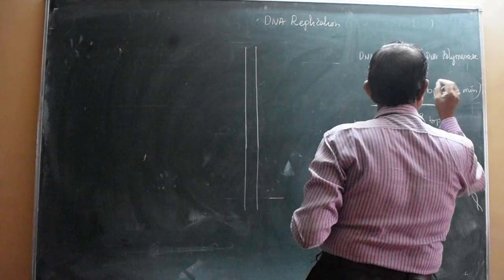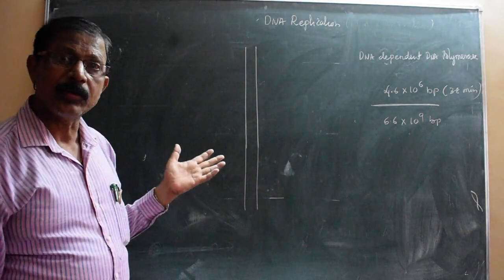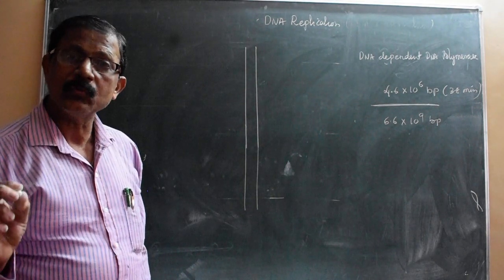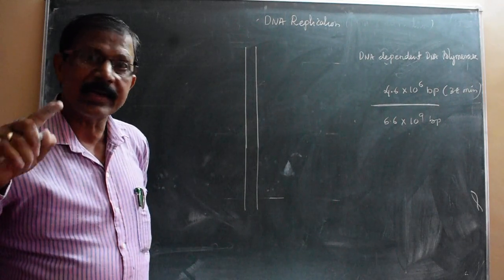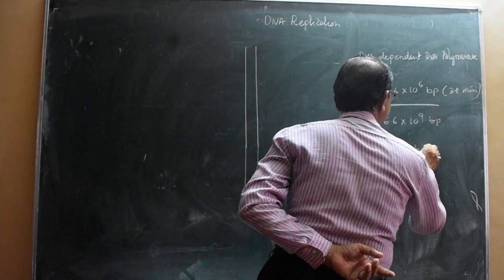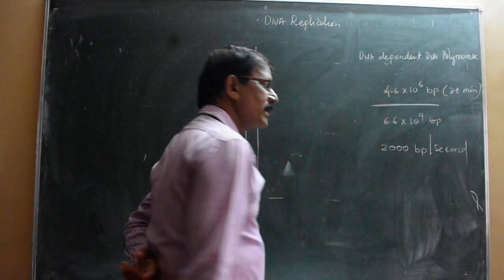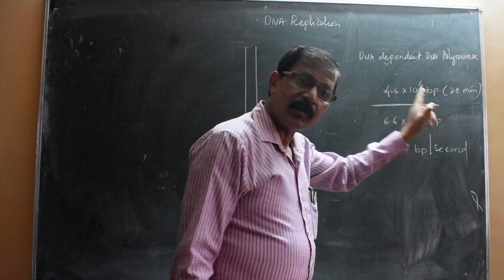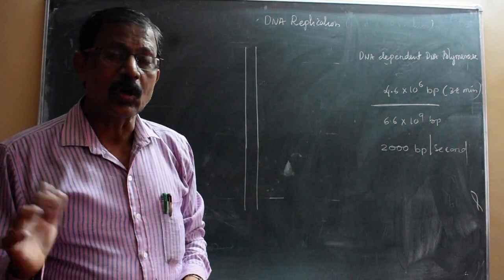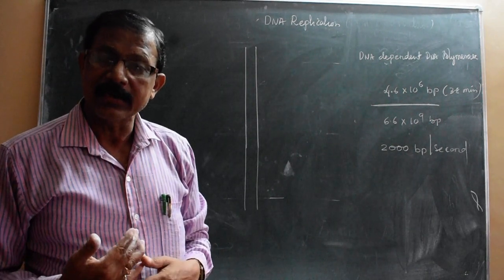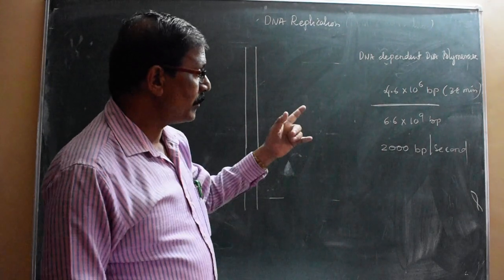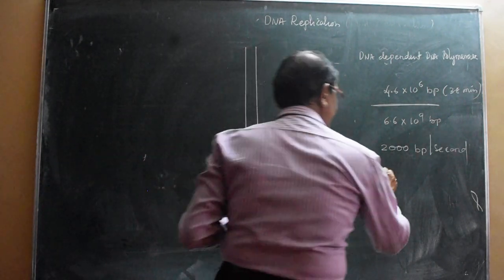Per second in E. coli, 2000 base pairs are polymerized - 2000 BP per second. Just imagine in what way DNA-dependent DNA polymerase carries out polymerization. Not only does it have to carry out the reaction at a high rate, but at the same time it has to maintain accuracy. Any mistake in the polymerization may result in mutation - that is why accuracy is also very important.